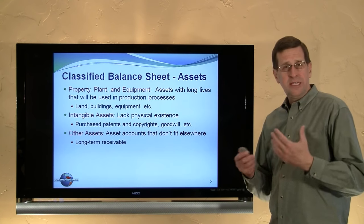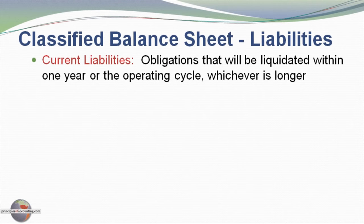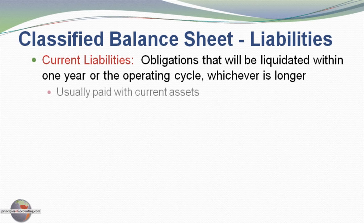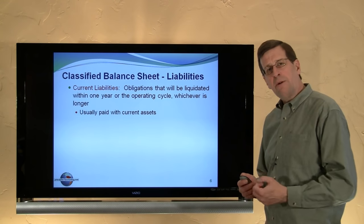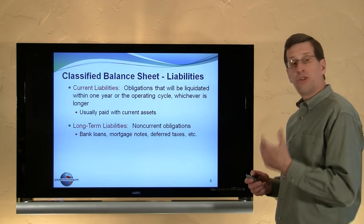Receivables from employees and long-term receivables are examples of other assets. Now turning to the liability side of the balance sheet, the first category we encounter is current liabilities. These are obligations that would generally be expected to be liquidated within one year, or longer if the operating cycle is longer than one year. Current liabilities are normally paid out of current assets and would include accounts payable, salaries payable, taxes payable, interest payable, and short-term loans payable.